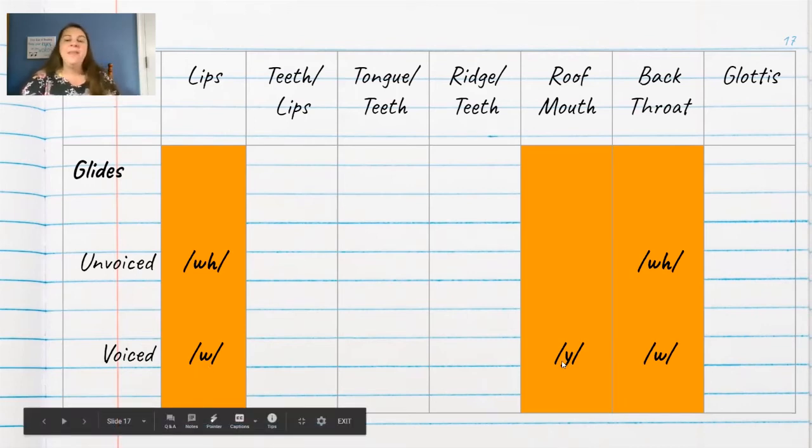And then we have the yuh sound like in yellow where you're pushing that sound up through the roof of your mouth and out. That one's hard to get that schwa off of. You got to practice that one quite a bit, the yuh sound.